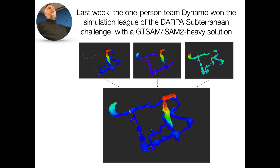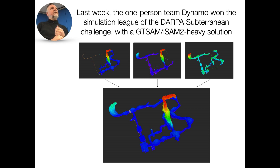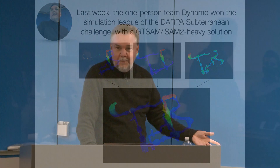I gave this talk one week after the DARPA Subterranean Challenge. The simulation league was won by one person — Hilario from Barcelona — who simulated five quadrotors and used GTSAM in at least two ways: iSAM and pose graph optimization. He won the simulation league and $750,000, which he's reinvesting into his new startup. So GTSAM can be a secret weapon to make lots of money.